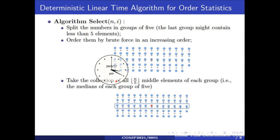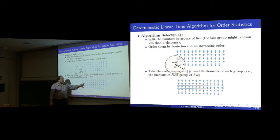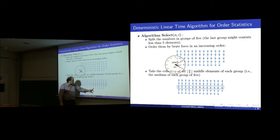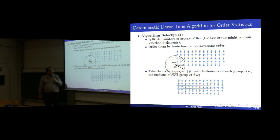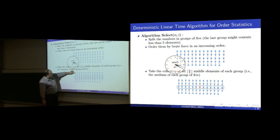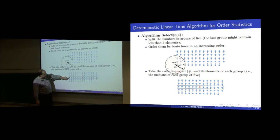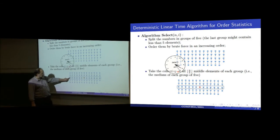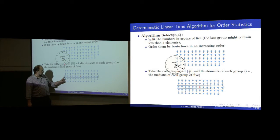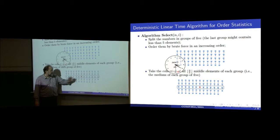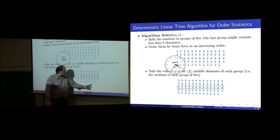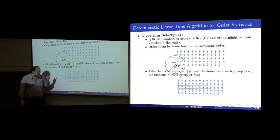All of these guys that are in this portion will all be smaller than the pivot. And all of these guys here are guaranteed to be larger than the pivot. Why? All of these guys are smaller than this guy. But this guy, because this is a median and we split around the median, all of these guys are smaller than this guy. So all of these guys are smaller than the pivot. All of these guys are larger than the pivot.